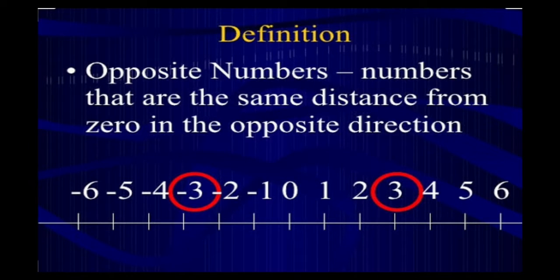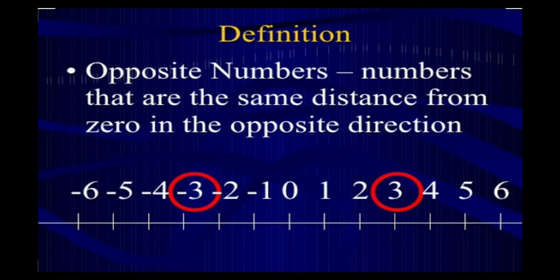Now the next concept is opposite numbers. Numbers that are at the same distance from zero in the opposite direction on the number line are known as opposite numbers. If we consider zero as the mirror, then one and minus one are opposite numbers. Whenever you add opposite numbers, the answer is always zero. We will use this concept again in the next video for subtraction of integers.